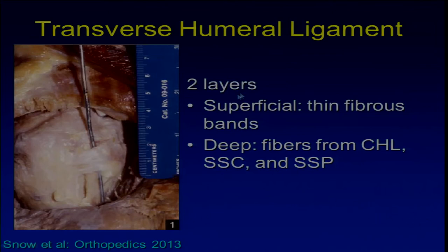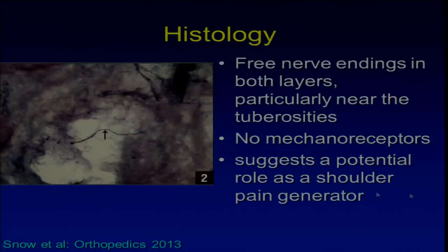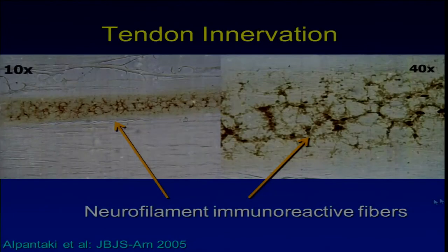This ligament is composed of two layers: one superficial thin layer and deep thick layers with fibers coming from the coracohumeral ligament, subscapularis, and supraspinatus. Interestingly, this ligament contains free nerve endings in both layers, particularly near the tuberosities, with no mechanoreceptors. This suggests the ligament has a potential role as a shoulder pain generator.